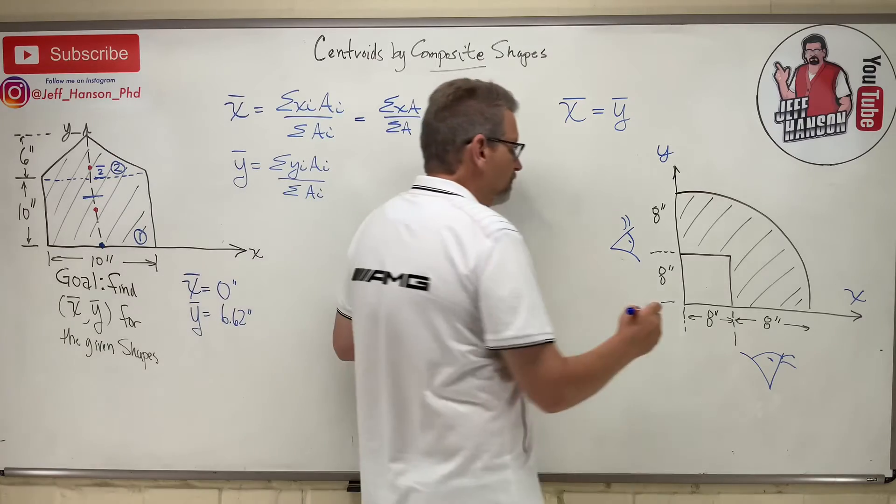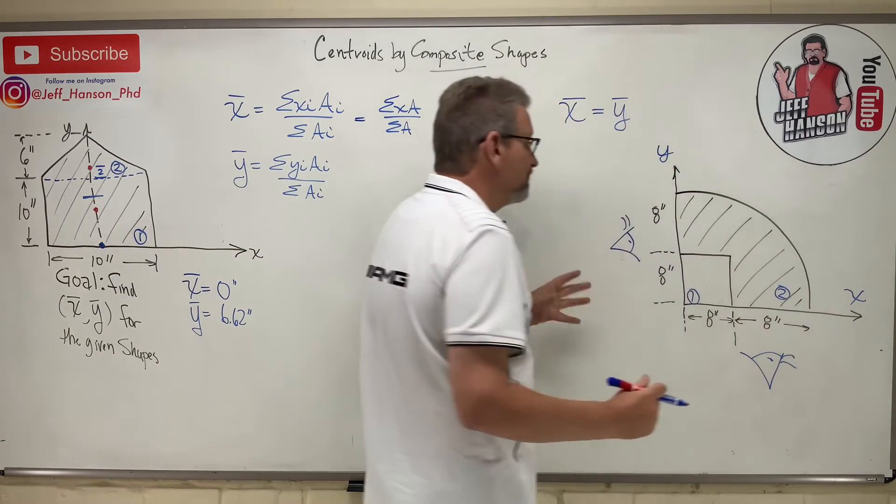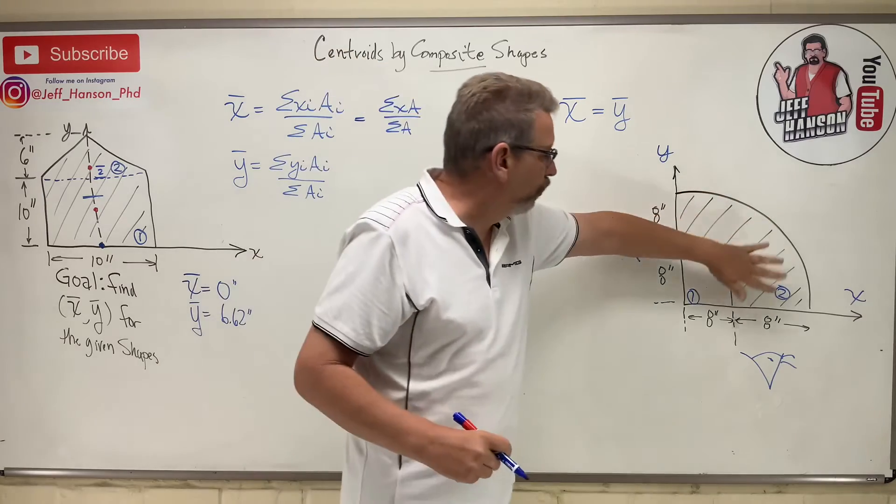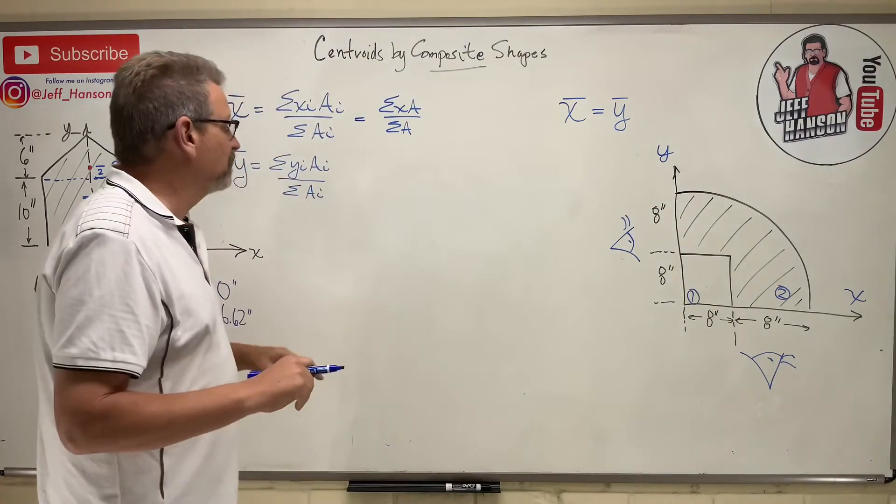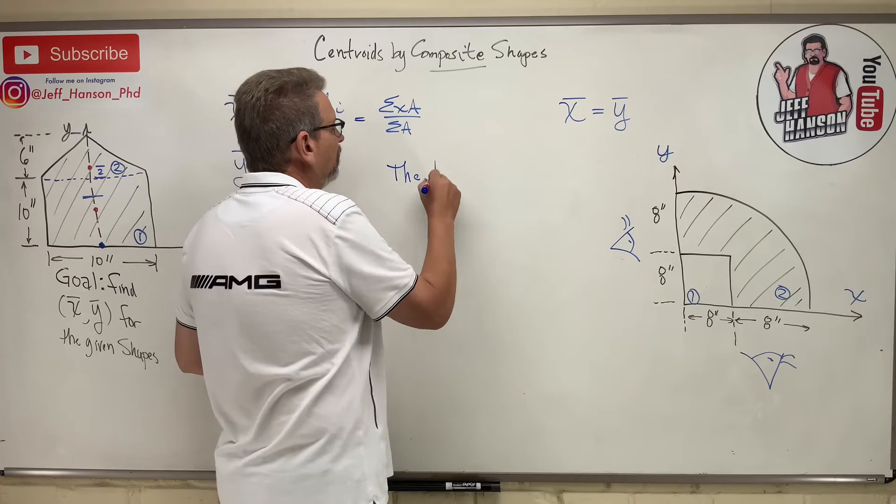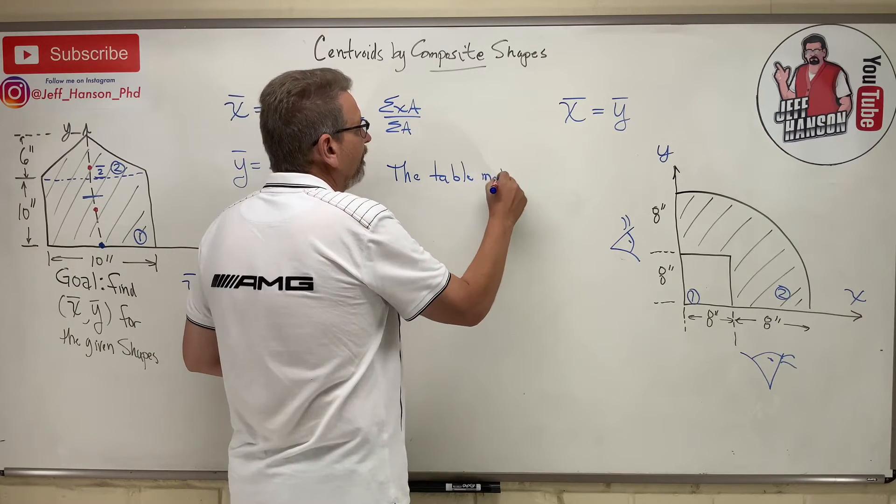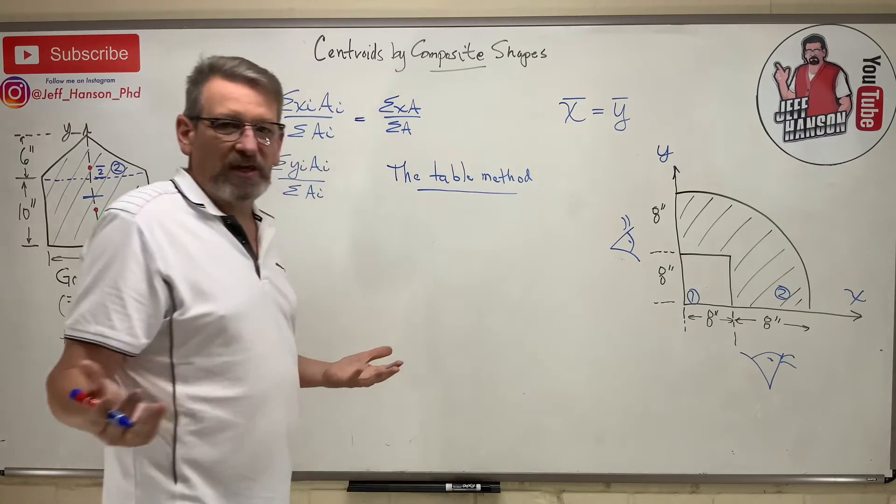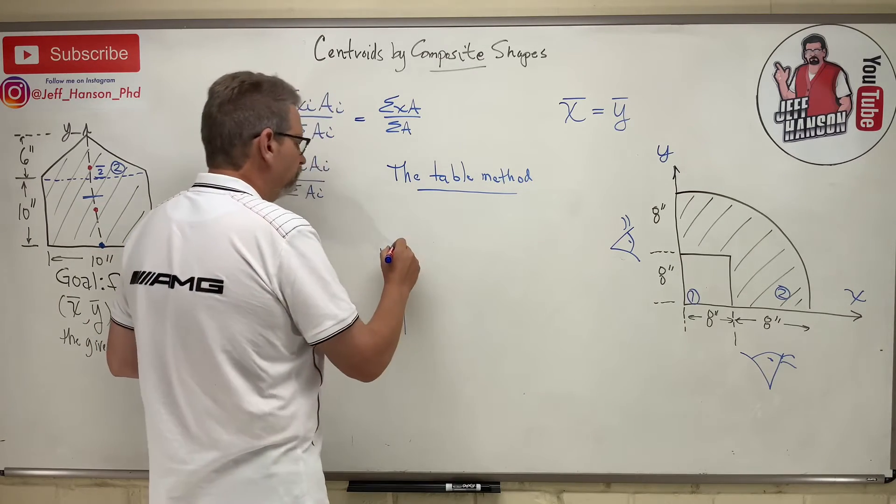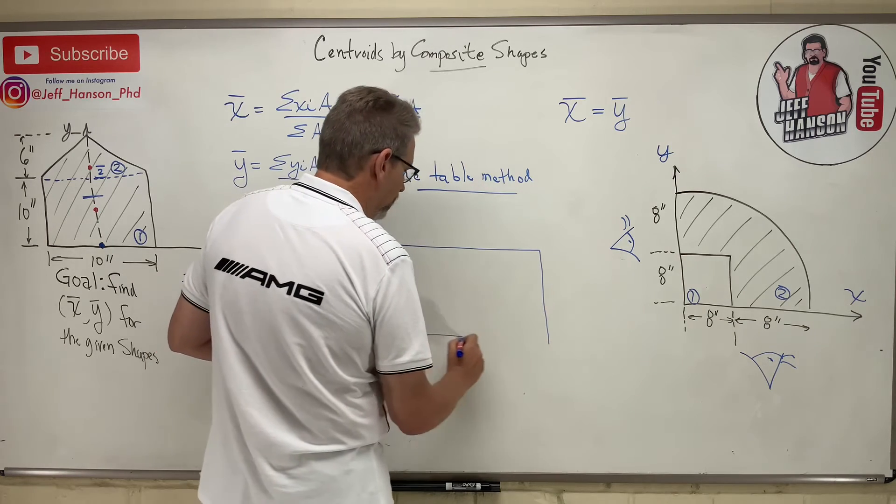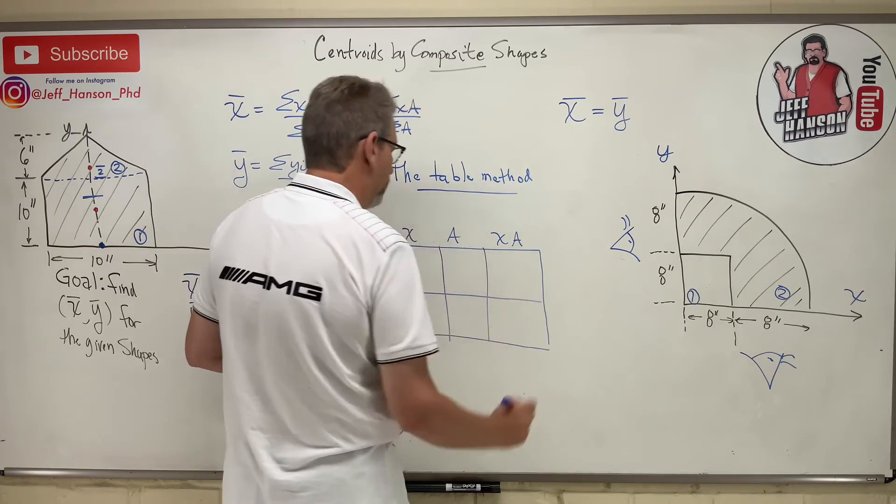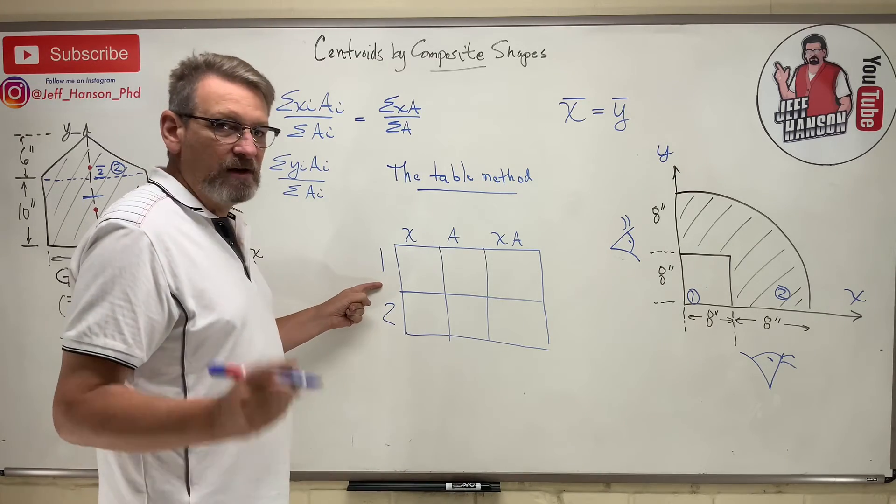So X-bar is the sum of the Xa's over the sum of the a's. Now this, we got two pieces. Piece number one, piece number two. So piece number one is the square that's not really there. And piece number two is the whole quarter circle. So we're going to have the whole quarter circle and then we'll subtract away the square. And here's an easy way to do that. So instead of having that equation that's written out long form, I'm going to teach you this, which I call the table method. And it's just a way, it's like a bookkeeping method to keep you from making a mistake. So we divide it into two parts. Piece number one, piece number two. And here's what I've got. I've got X, A, and XA. So all I got to do is fill this table in and not screw it up.